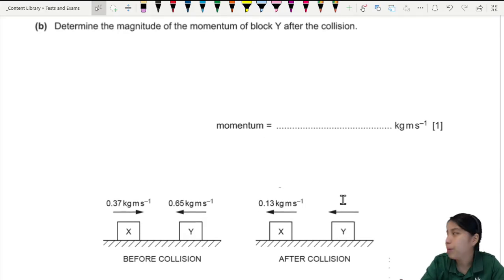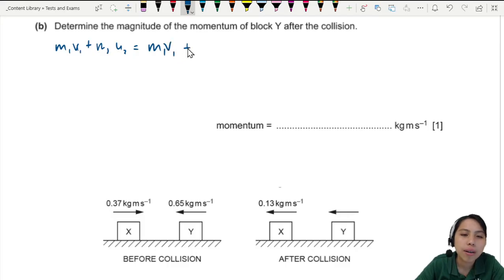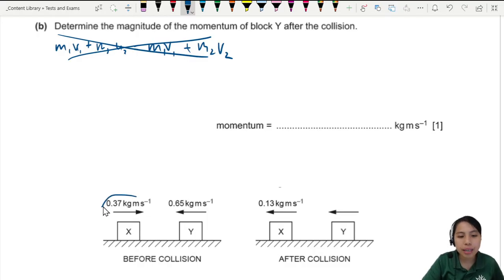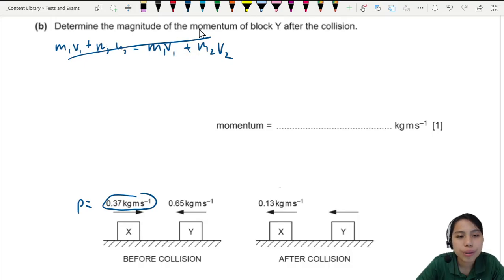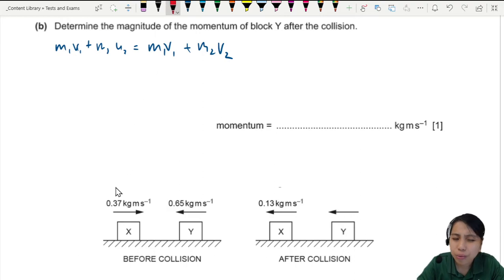Next, determine the magnitude of momentum of block Y after the collision. So I repeat the diagram here for convenience. You may be very tempted to do this: M1 U1 plus M2 U2 equals to very long M2 V2. But we don't need this because they already gave us the momentum. This is already p, so you can just say momentum of X plus momentum of Y.